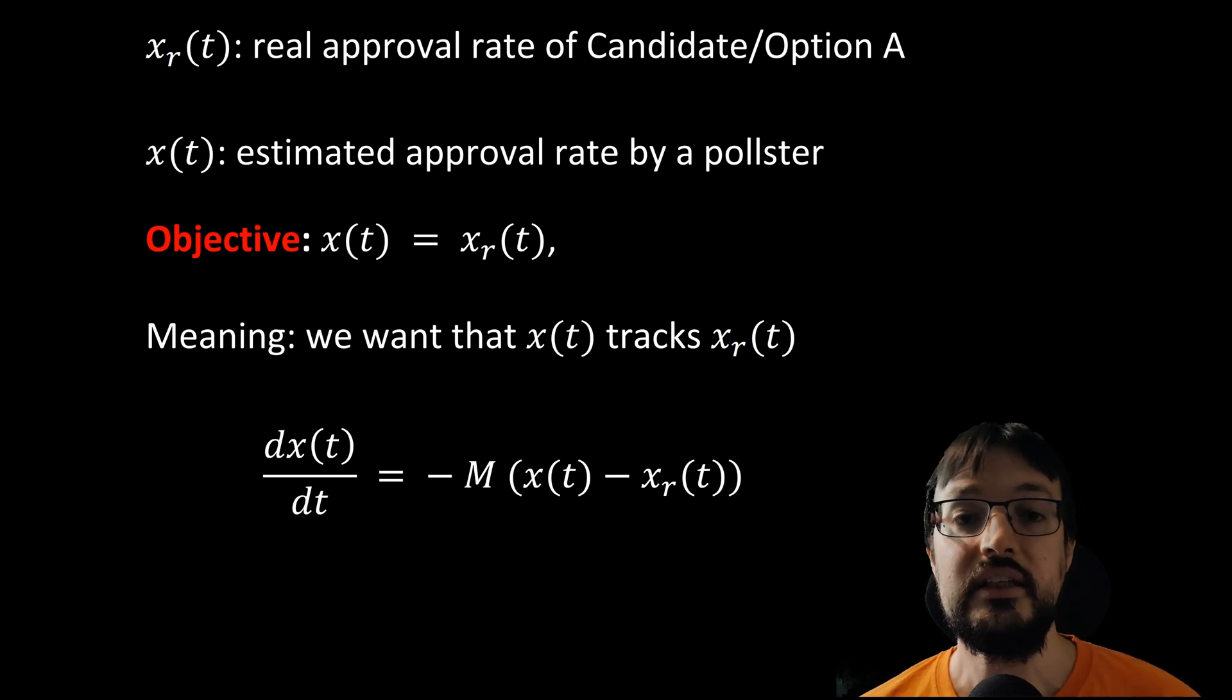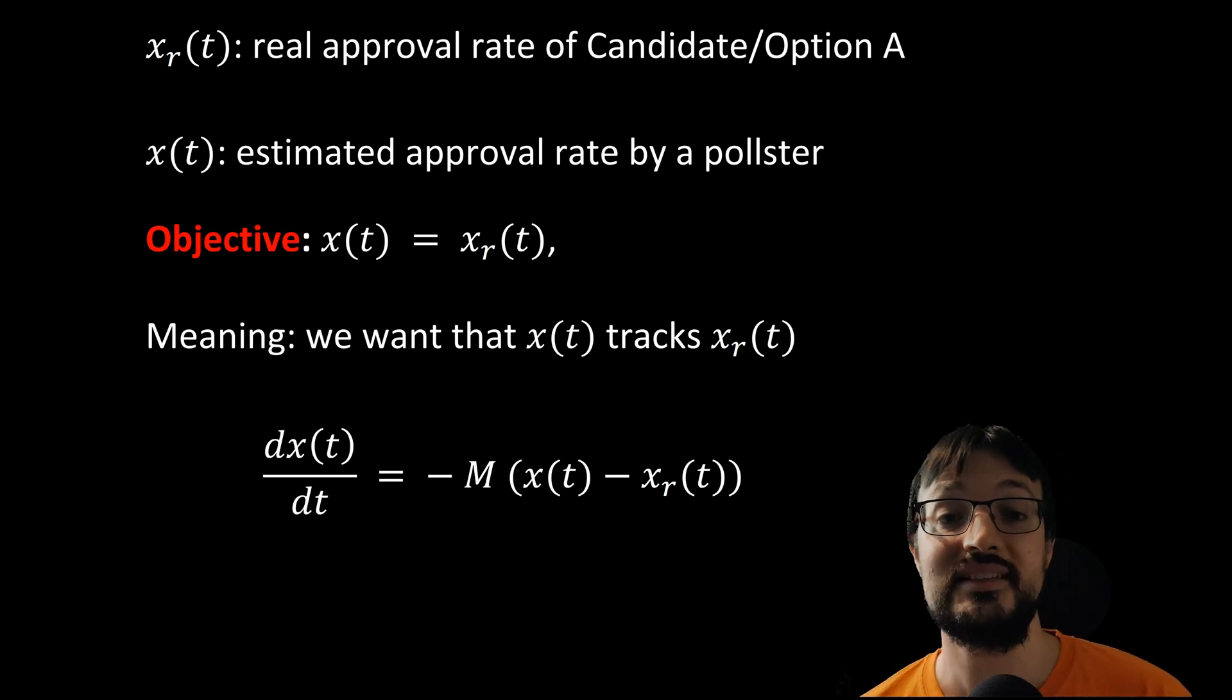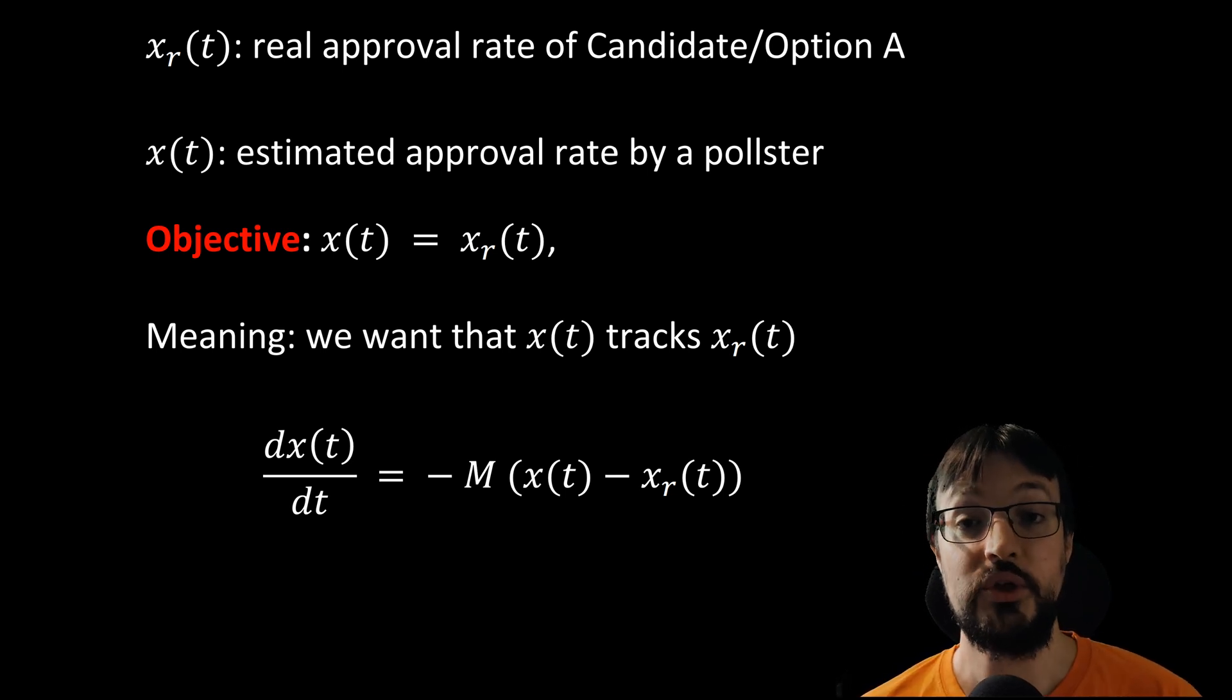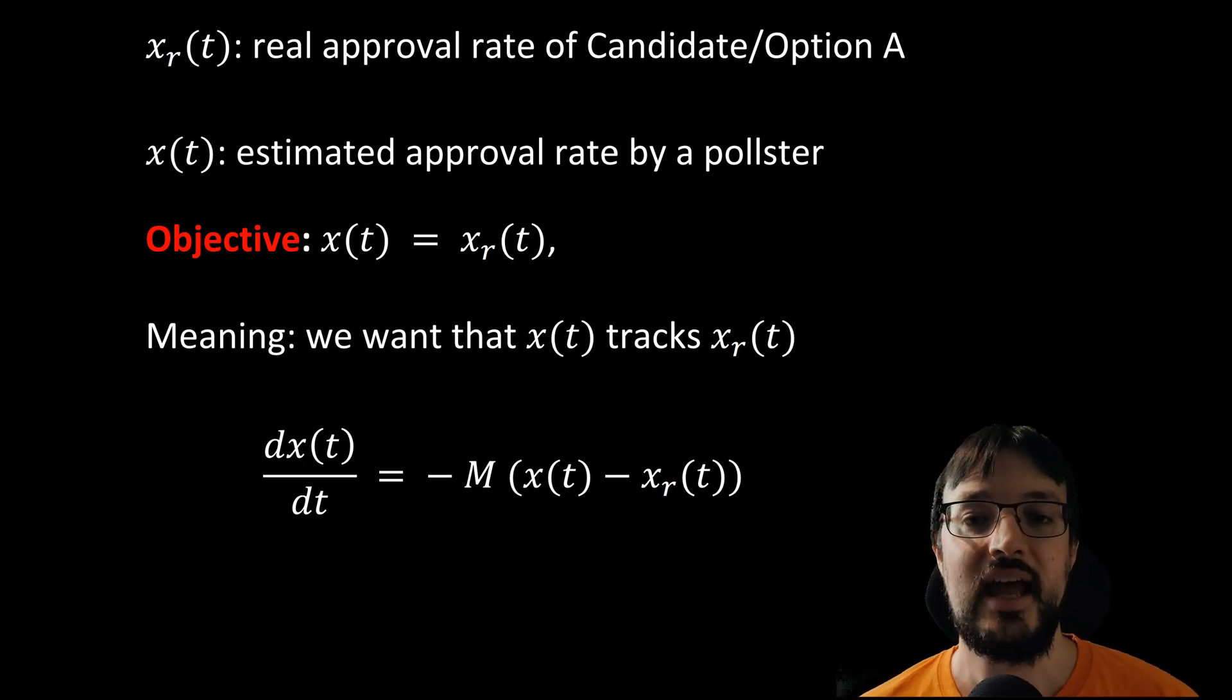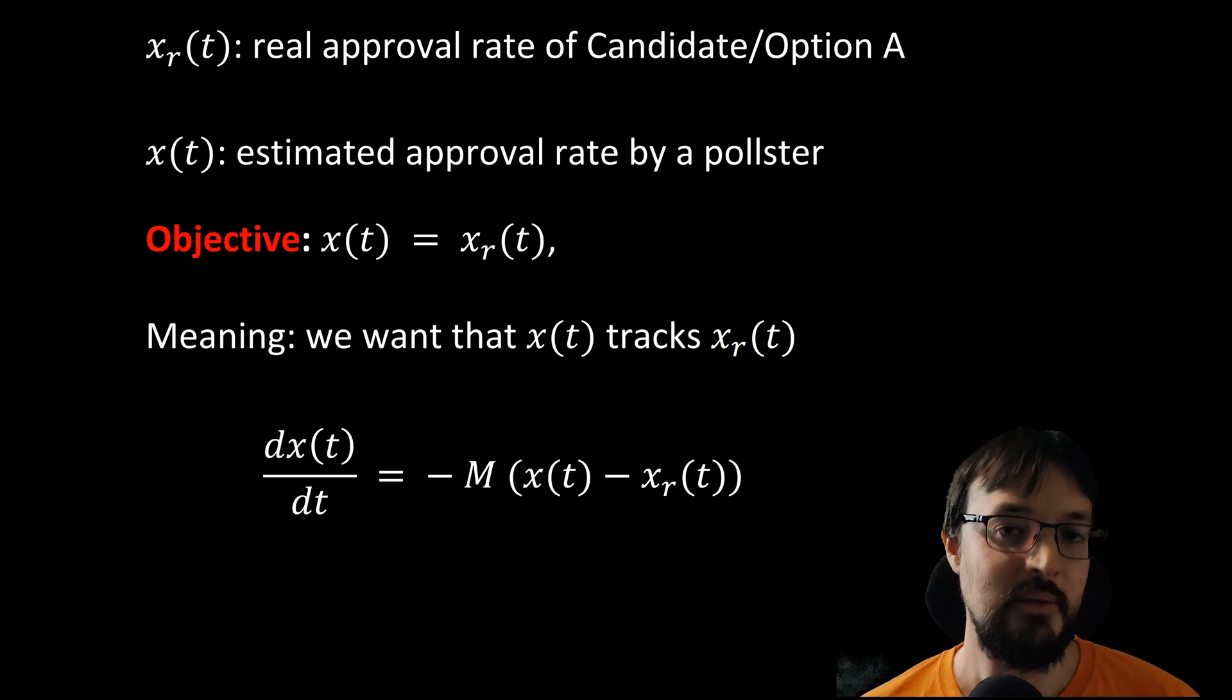dx/dt indicates the derivative of x. The derivative of x can be understood as how x changes. If the derivative is positive, then x will grow. If the derivative is negative, then x will decrease. If the derivative is zero, then x will stay constant. On the other side of the equal, we have minus M times (x minus x_r), where M is a positive number that I will explain in a moment.